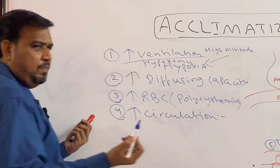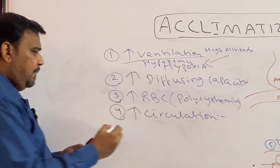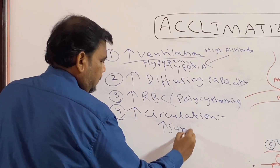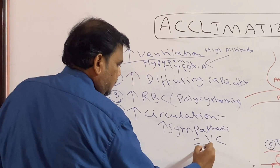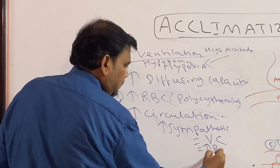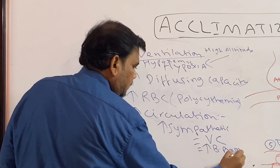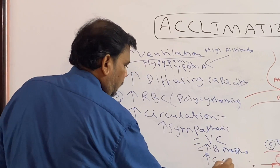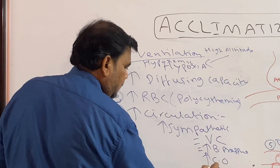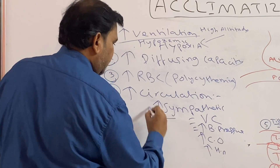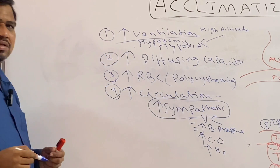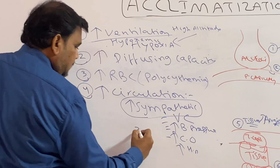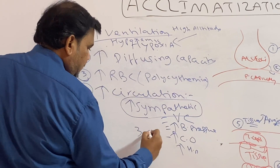Going to the fourth point — increased circulation. In hypoxia, there is increased sympathetic activity, leading to increased blood pressure, increased cardiac output, and increased heart rate. Cardiac output is increased by 30% of normal.